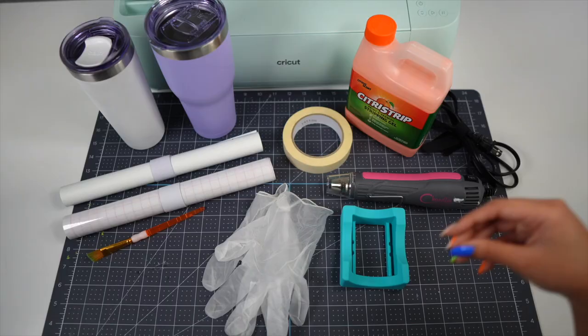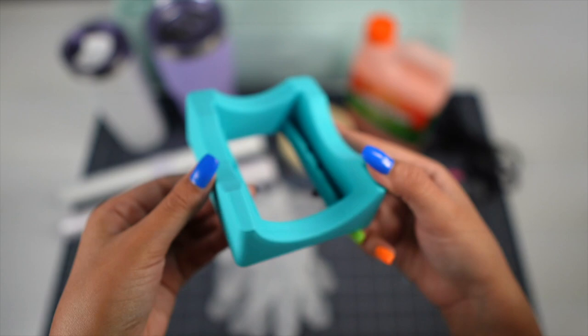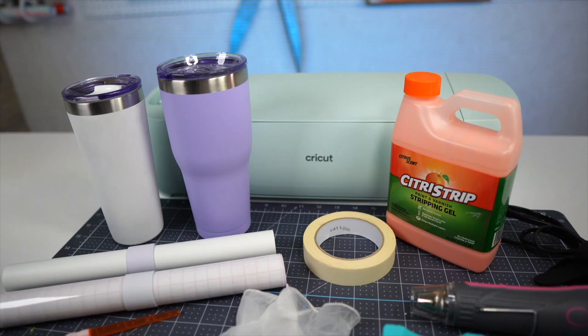A paintbrush, a pair of gloves, a tumbler holder which is totally optional but it will come in handy, and lastly a heat gun. And of course we can't forget about the Cricut machine.